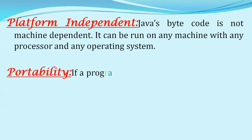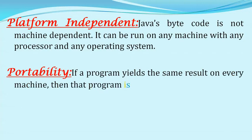The next feature is platform independent. In Java, the compiler converts source code to bytecode and the JVM converts bytecode to machine code. This bytecode is not machine dependent — it can be run on any machine with any processor and any operating system. That's why any software developed using Java will work on any operating system.